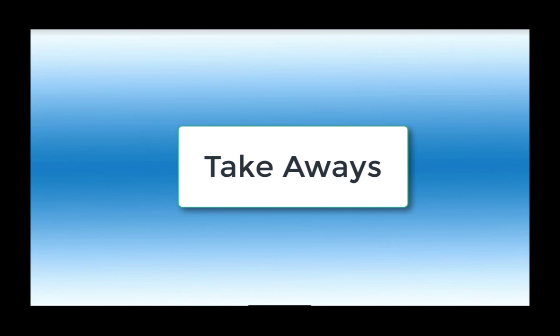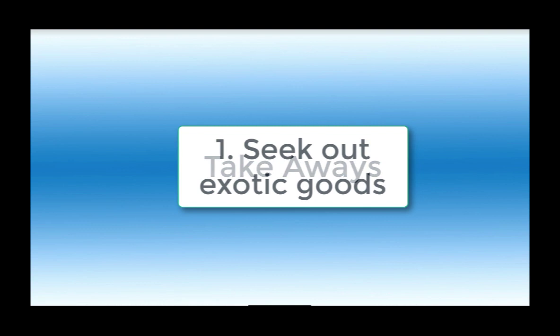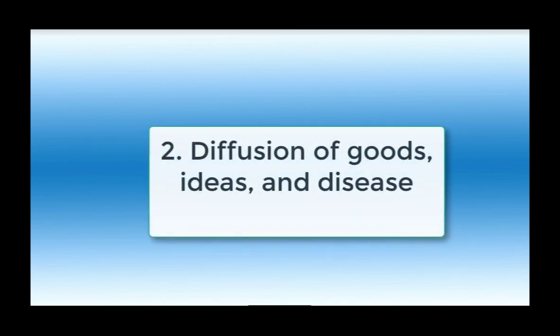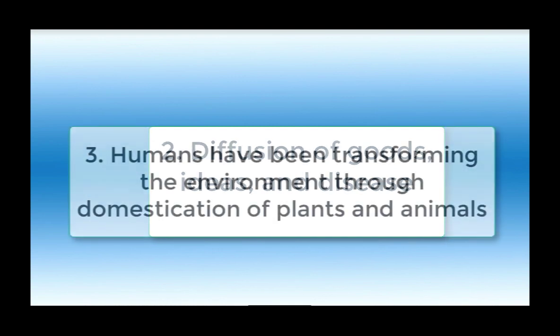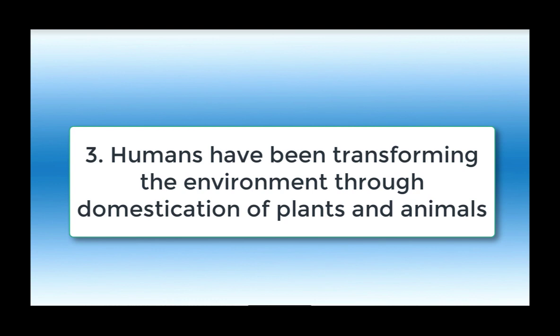So, three major takeaways: Number one, humans have been pursuing exotic goods since the beginning, using domestic production to support their local area. Number two, trade has meant diffusion and mixing of goods and ideas across communities, but also the spread of disease as a downside. Number three, humans have been transforming their environment for centuries using technologies like monsoon winds, camels, horses, and innovations like saddles.